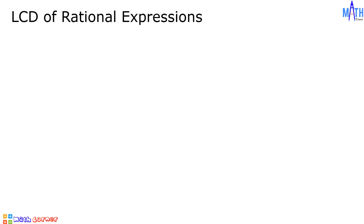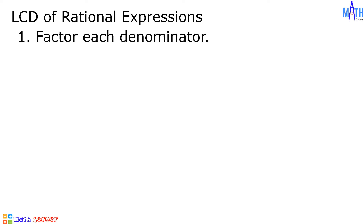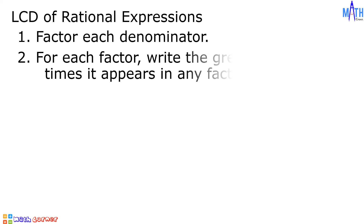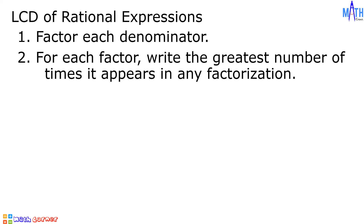To find the LCD or least common denominator of rational expressions, we need to factor each denominator, and for each factor, we will write the greatest number of times it appears in any factorization, and number three, we will simplify the LCD.